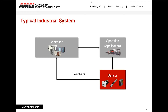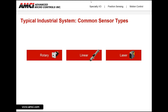That position feedback can be used to speed up, slow down, start, or stop that motor. There are multiple ways to get position feedback, but the most common types are rotary sensors — encoders, which many of us are familiar with — resolvers, or even potentiometers.